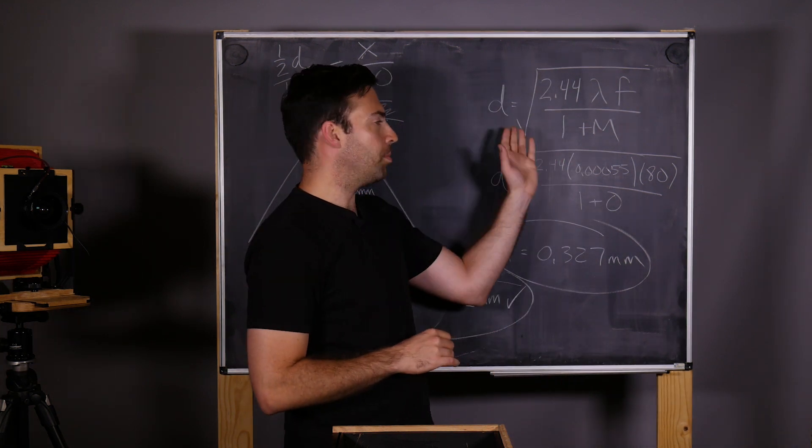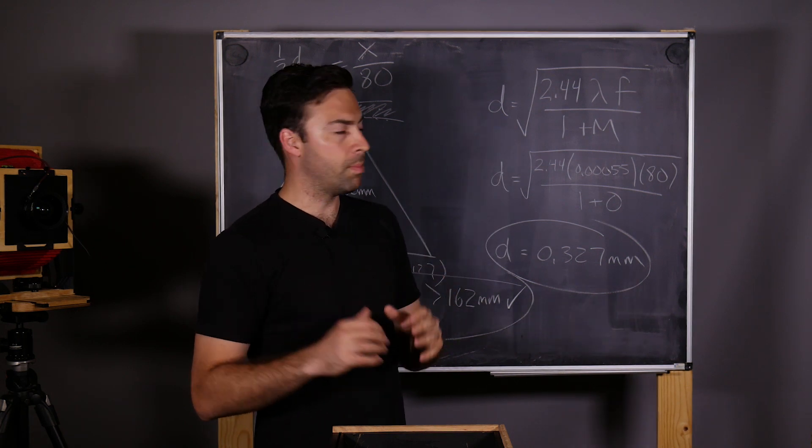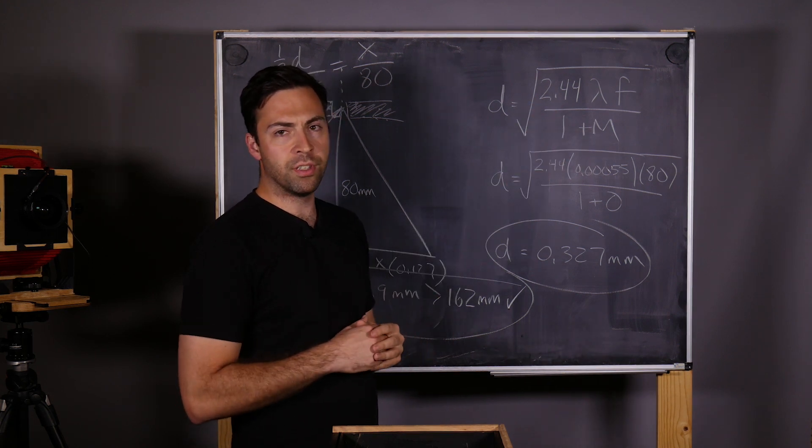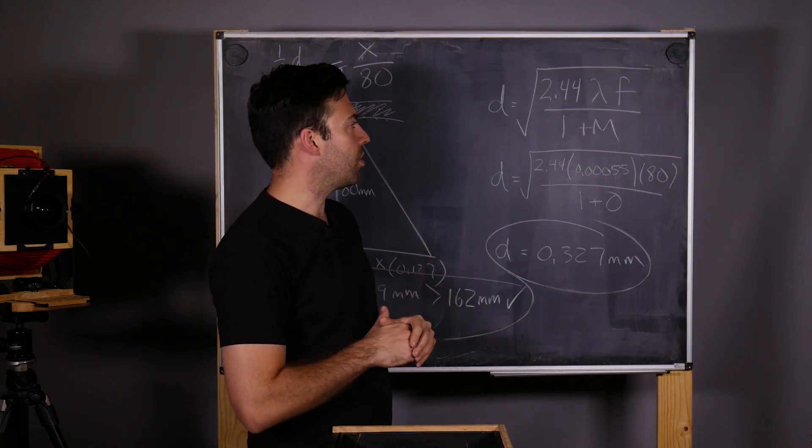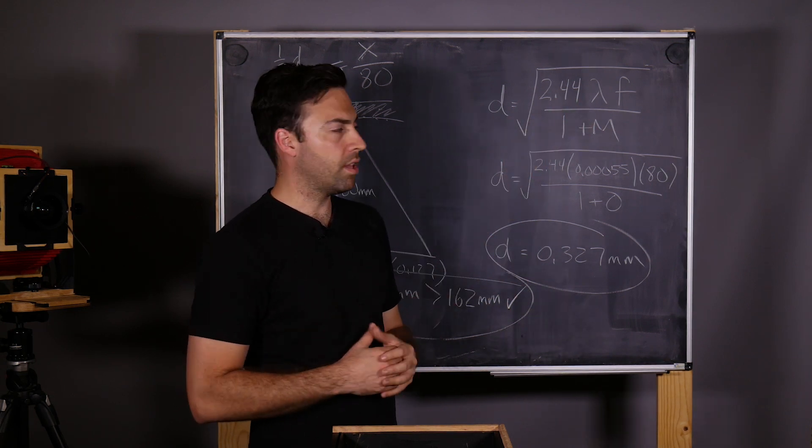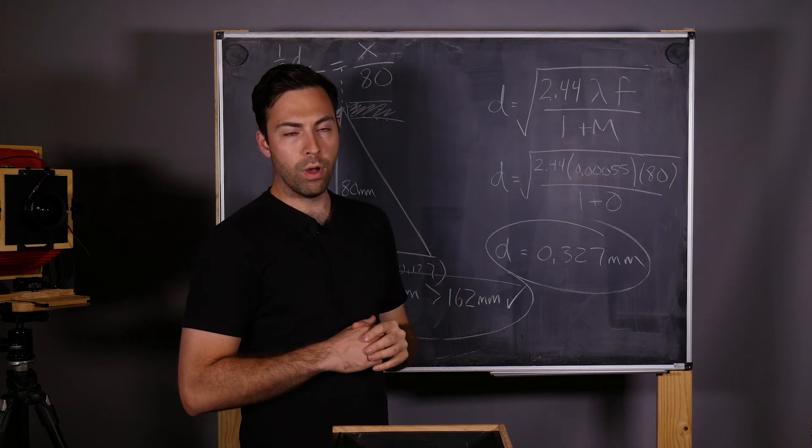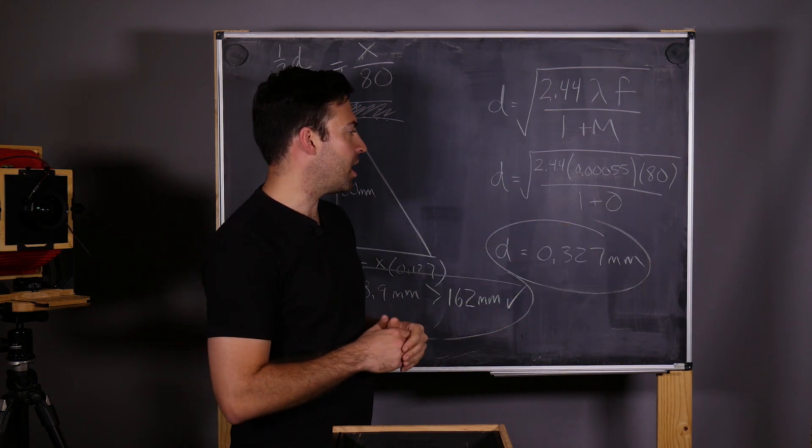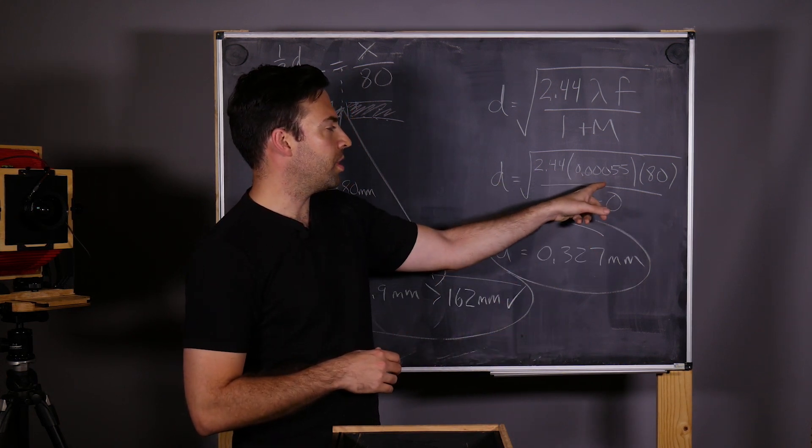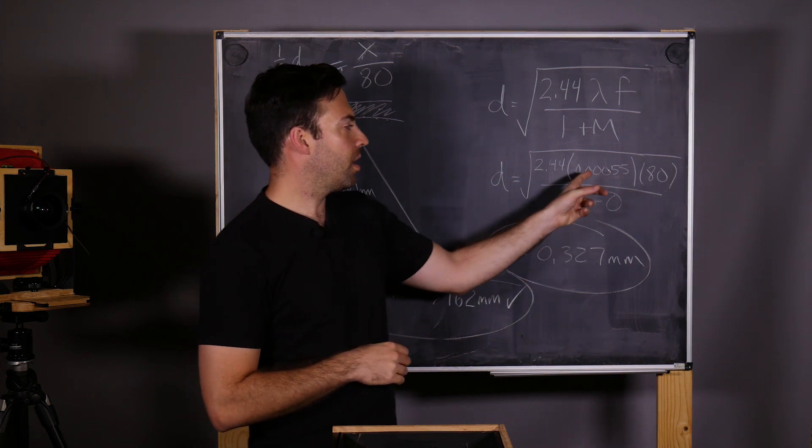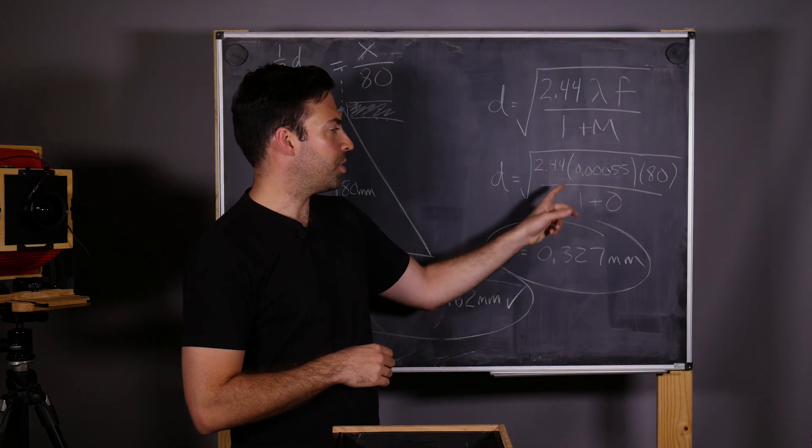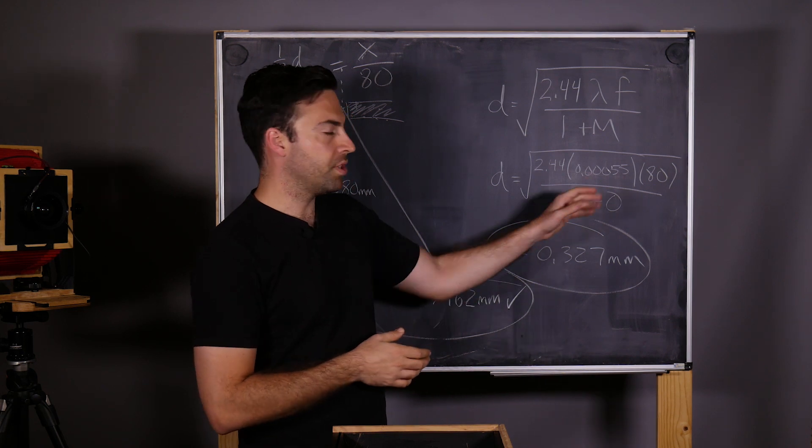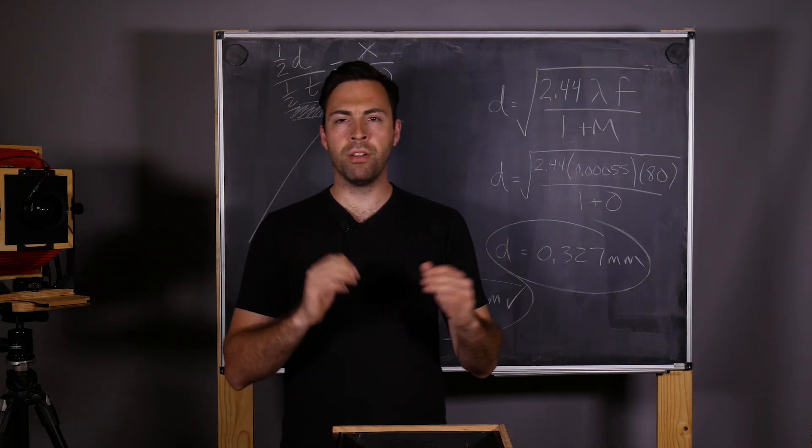For this camera, we have our optimal pinhole diameter equation. The diameter of the pinhole equals the square root of 2.44, which is a constant derived from the diameter of airy disks, times lambda which is the wavelength of light, times the focal length, all divided by 1 plus m, where m is magnification. I've plugged in the numbers for our specific case: 2.44, and I'm using 550 nanometers, which is 0.00055 millimeters. We're using 550 nanometers because that's about the middle of the visible spectrum of light.